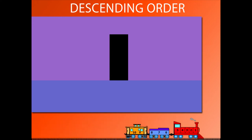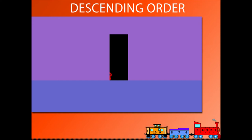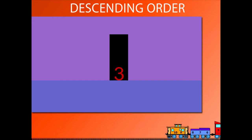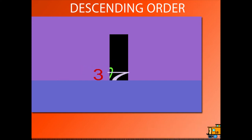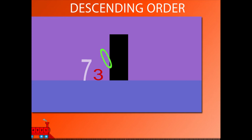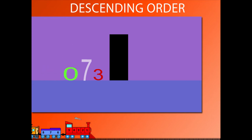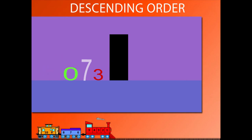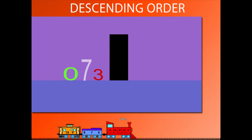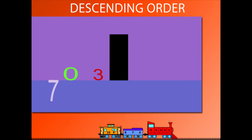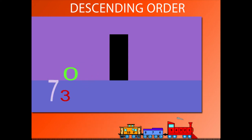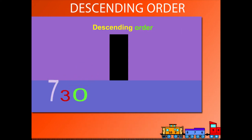Here come numbers from behind the wall. Here comes 3, 7 and 0. 7 is the largest of the 3. So in descending order, they will read as 7, 3, 0.